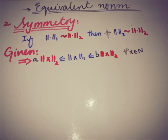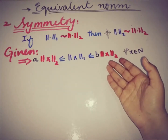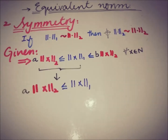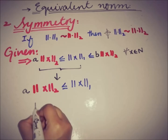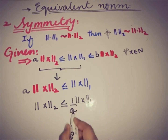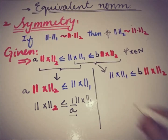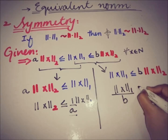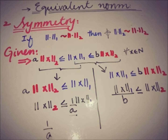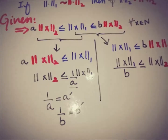If norm 1 is equivalent to norm 2, we can write: a·‖x‖₂ ≤ ‖x‖₁ ≤ b·‖x‖₂ for all x in N. Rearranging, we get ‖x‖₂ ≤ (1/a)·‖x‖₁ and (1/b)·‖x‖₁ ≤ ‖x‖₂. Since a and b are positive, 1/a and 1/b are also positive. Let a' = 1/b and b' = 1/a, which are also positive quantities.